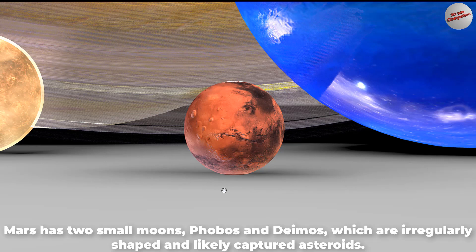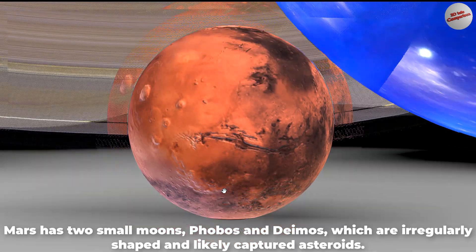Mars has two small moons, Phobos and Deimos, which are irregularly shaped and likely captured asteroids.